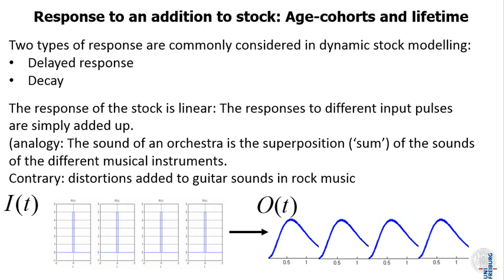What we can do now is to take different input pulses over time and see how their response overlaps. If the response of the stock is linear, we can just add the responses to the different input peaks at the different times. When my first input peak creates a certain outflow after some time and the second one creates another outflow, I can just add them all together and then I get the total outflow as a response to the different inflows.